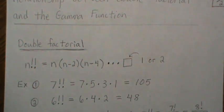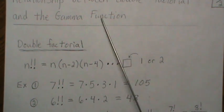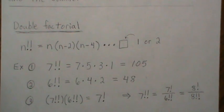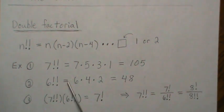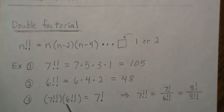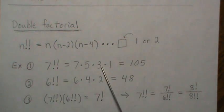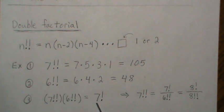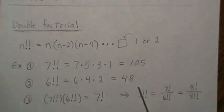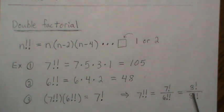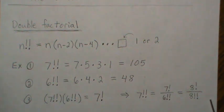A couple of notes we're going to use: the relationship between the double factorial and the gamma function will hinge upon this. Notice that if we take the product of these two — seven double factorial and six double factorial — we get one times two times three times four through seven, which is seven factorial. You can divide both sides by six double factorial to get that relationship. Equivalently, if you take eight factorial and divide out the even numbers eight, six, four, two, you also get seven double factorial.